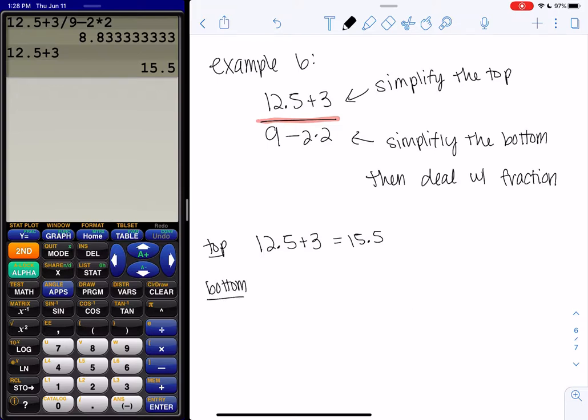The bottom, we're going to follow order of operations. So it's not 9 minus 2, right? Multiplication comes first. So we'll get 9 minus 4, which is 5.